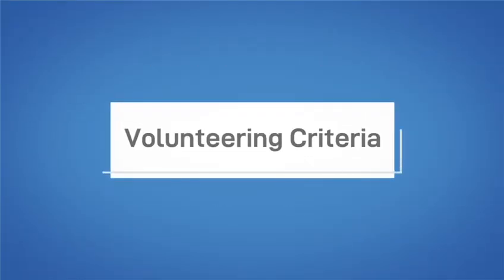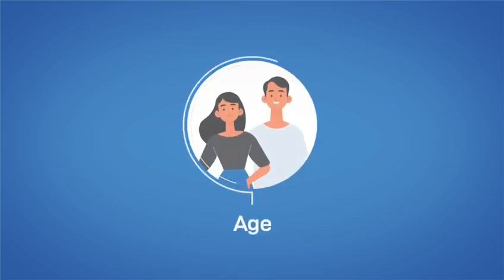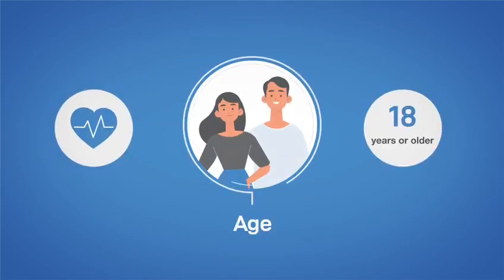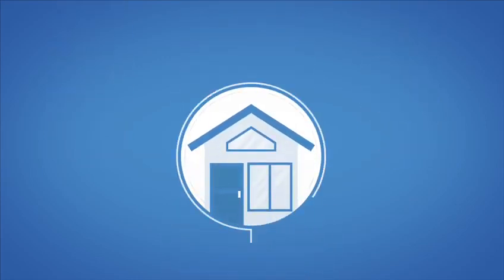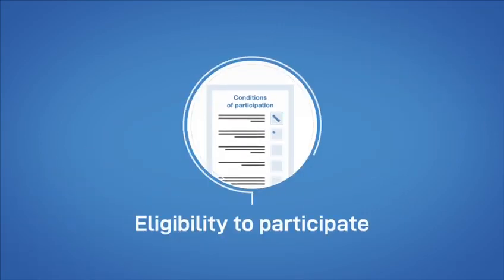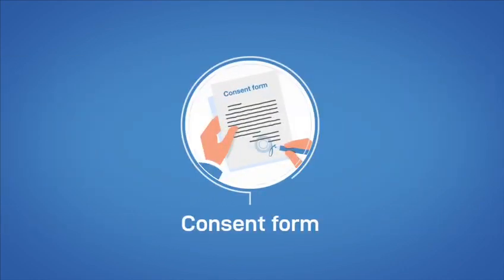Volunteering Criteria: All volunteers must be 18 years or older and maintain good health. Register using official documents such as an ID card or passport. Reside in the Kingdom of Bahrain or have a valid residency during the trials period. Undergo a health assessment in order to participate in the trials and sign a consent form before starting the trials.